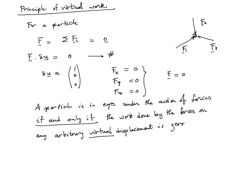We can state the principle of virtual work in the following way: a particle is in equilibrium under the action of forces if and only if — it is both a sufficient and necessary condition for equilibrium — the work done by the forces on any arbitrary virtual displacement is zero. The principle states that a sufficient and necessary condition for equilibrium is that F dot delta U equals zero for any choice of delta U, where delta U is a small arbitrary displacement, which we call a virtual displacement. In matrix form we write this as F-transpose delta U equals zero, or equivalently delta U-transpose F equals zero.